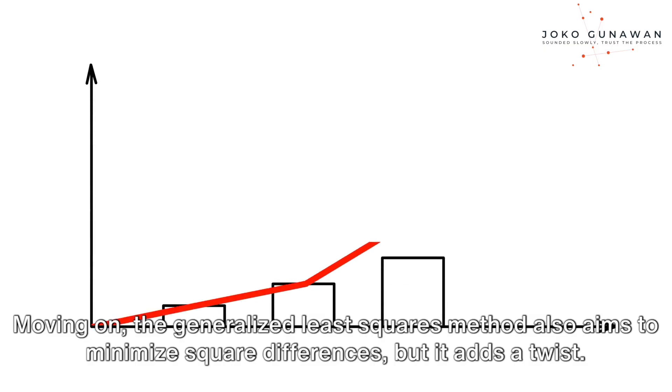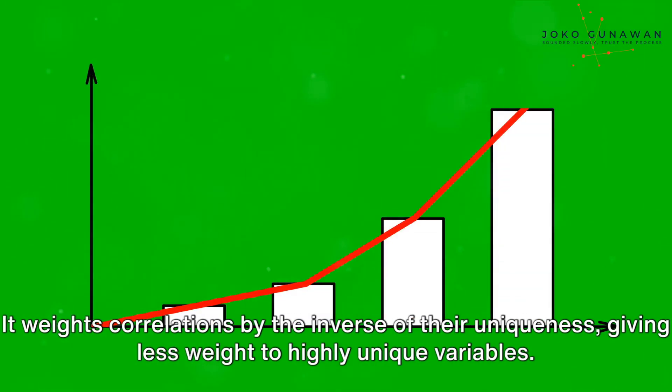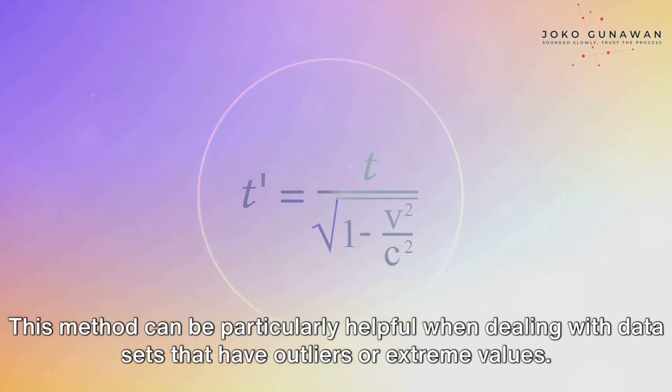Moving on, the generalized least squares method also aims to minimize square differences, but it adds a twist. It weights correlations by the inverse of their uniqueness, giving less weight to highly unique variables. This method can be particularly helpful when dealing with data sets that have outliers or extreme values.